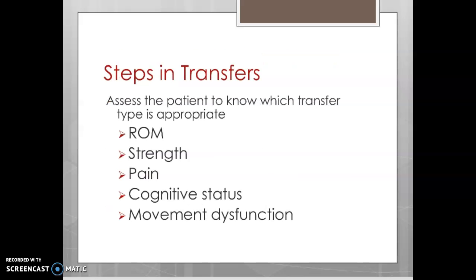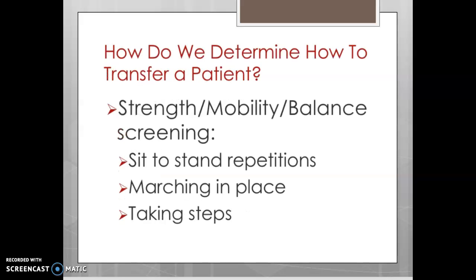We want to look at the patient's range of motion, strength, and pain before we consider which transfer is going to be the most appropriate. Cognitive status — are they able to follow directions and understand what we are doing and why? Movement dysfunction — do they have issues with motor planning? Are they impulsive? Are they lacking coordination? All of these will be areas for consideration. Sometimes we may want to do some sort of assessment in addition to looking at range of motion and strength before we transfer a patient.